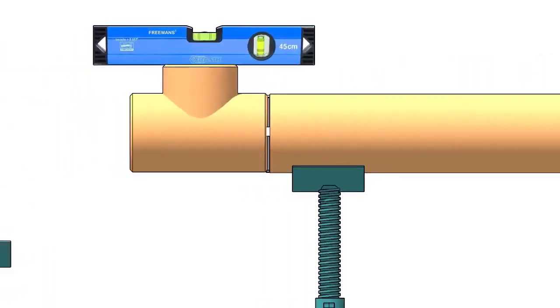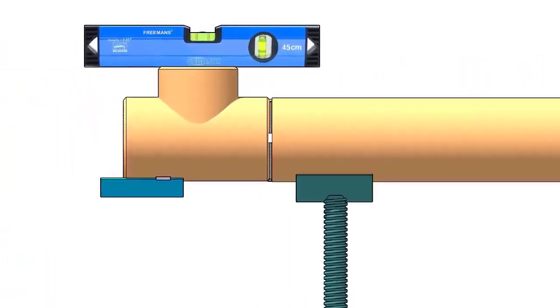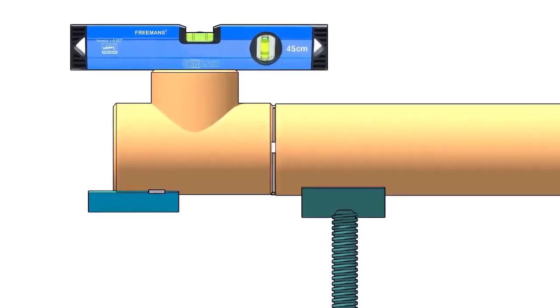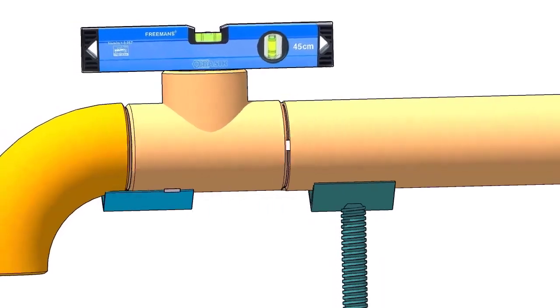Tack weld the piece of angle below the tee if you don't have a ready-made pipe clamp. The size of the angle cleat may vary according to the size of the elbow. Here I am using a 50-50 angle because the pipe diameter is 6-inch.